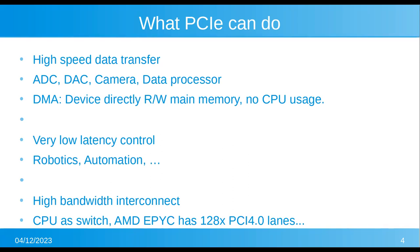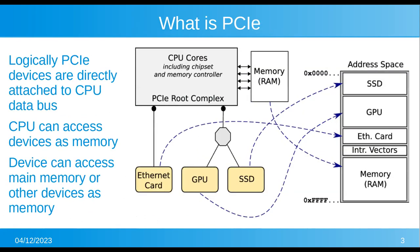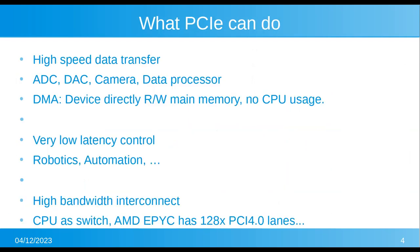When you're controlling something like a car or a robot from a computer, the best way is to attach it on PCI Express. For high-speed interconnect, since PCI Express is a memory bus, you can write data into main memory or write data into another card, and the data flows through the CPU very fast. This can be used as something like an Ethernet switch or packet switch, but with much lower latency than Ethernet.